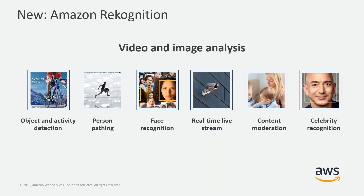If you've ever taken your kids to an amusement park, you can immediately see the value in person pathing. That's available via the Rekognition service, along with facial recognition. That service within Rekognition actually comes with a wealth of features for demographic sentiment analysis, age guessing. So there's a lot of data there along with that facial recognition.